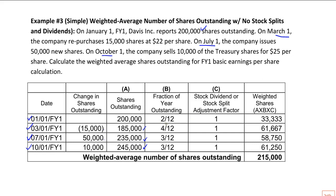How many months of the year is each row outstanding? The first row is January and February — you might be tempted to say three, but March 1 is when the next event occurs, so that's two months. Row two covers March, April, May, June — that's four twelfths. Row three is July, August, September — three months. Row four is October, November, December — also three. You check the column: 2 plus 4 is 6, plus 3 is 9, plus 3 is 12. The sum of the weights should equal one, so that checks out.